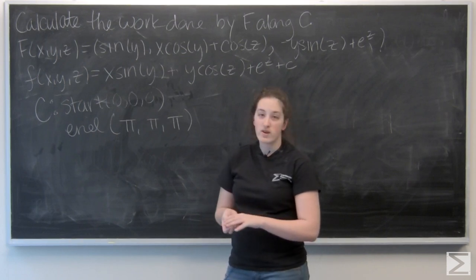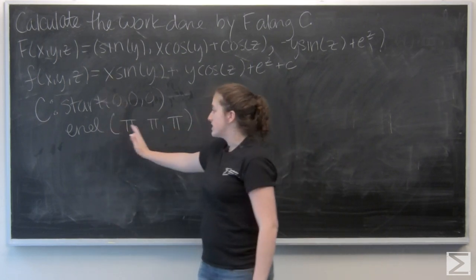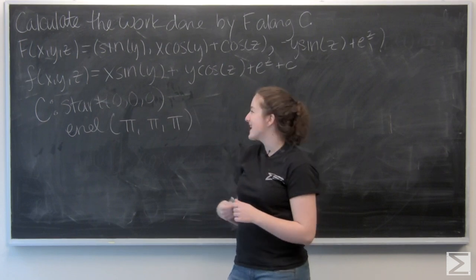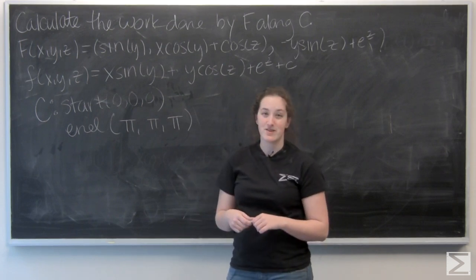To find this work done, I'm going to want to find my potential function of pi pi pi, and subtract that from the potential function's value at 000.